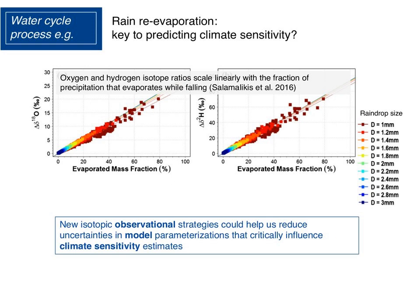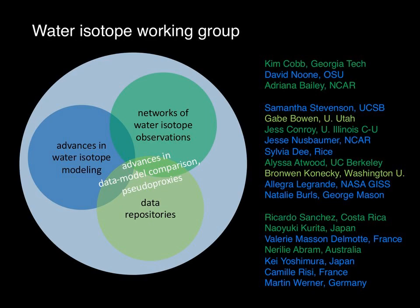These are the kinds of questions our working group is really working to address. Our approach is through a combination of observations, modeling, and also thinking about data science — ways to keep and preserve the information from our observational and modeling experiments. Our working group members, shown on the right, come from both the United States and other countries, with diverse expertise in different disciplines, different institutions, and a good mix of career levels, all working together to support these integrated objectives.